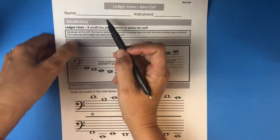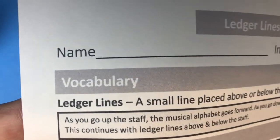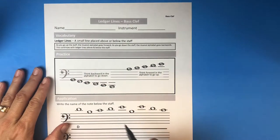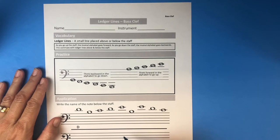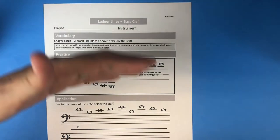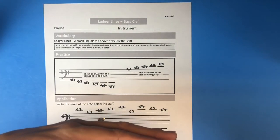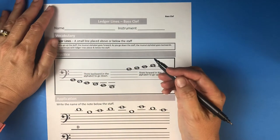Notice how it's spelled: L-E-D-G-E-R, ledger lines. They are a small line placed above or below the staff, and they are there to extend range — to make instruments able to play more different notes, to have a bigger range, meaning more note options.